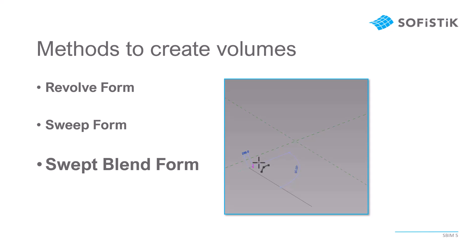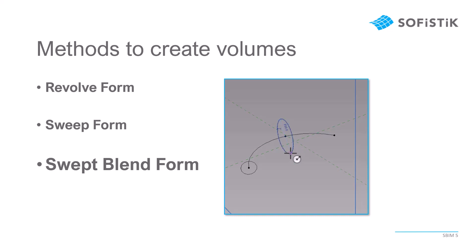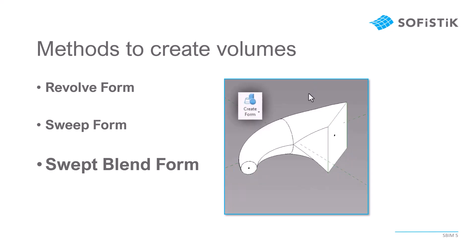Next up we have the swept blend form. This is very similar to the sweep form because we first need a path, but I will now create multiple reference points. For each reference I have selected, you can see that I first always have to select the corresponding reference plane. You can see I can vary those circles, for example, in diameter, but I can also create something completely different like a rectangle. The program will then interpolate in between those geometries. I create them as reference lines and click on Create Form — here you can see the result.